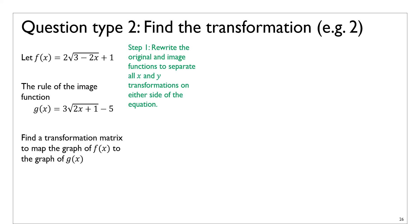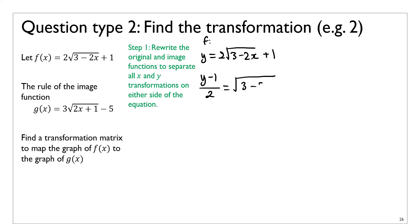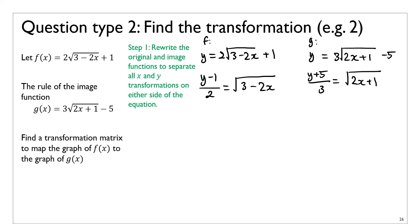The first thing we need to do is some tidying up, so that all the x-transformations are on one side and all the y-transformations are on the other, so you can then compare the original function and the image. With the original function f, we have y = 2 times square root of (3 − 2x) + 1, so I'm going to move all the y-transformations to the left: (y − 1)/2 = square root of (3 − 2x). That's function f. I'll do the same for the image g: y = 3 times square root of (2x + 1) − 5, which gives (y + 5)/3 = square root of (2x + 1).